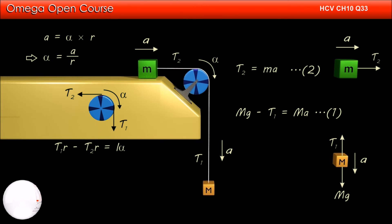Thus, the net torque about the axis is (T₁ - T₂)r, which must equal Iα. Putting α = a/r and simplifying, we get T₁ - T₂ = Ia/r².